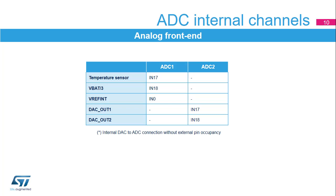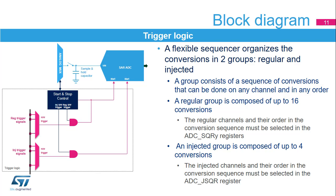This table indicates how the internal analog channel is connected to two ADCs. Conversions are organized in two groups: the regular group and the injected group. The injected group can preempt the execution of the regular group sampling sequence. The user is in charge of selecting the size of each group: maximum 16 acquisitions in the regular group and 4 in the injected group. They also have to assign the analog channels for each sampling within the sequence. Each group has its own trigger logic. The trigger can be an external signal coming from GPIOs or timer outputs. A sequence of acquisition can also be triggered by software.